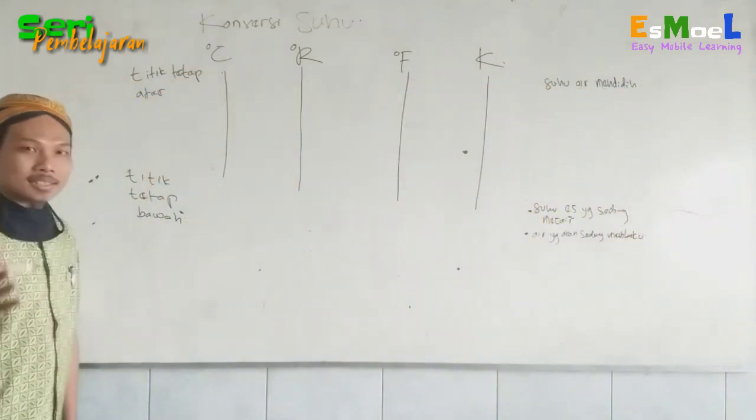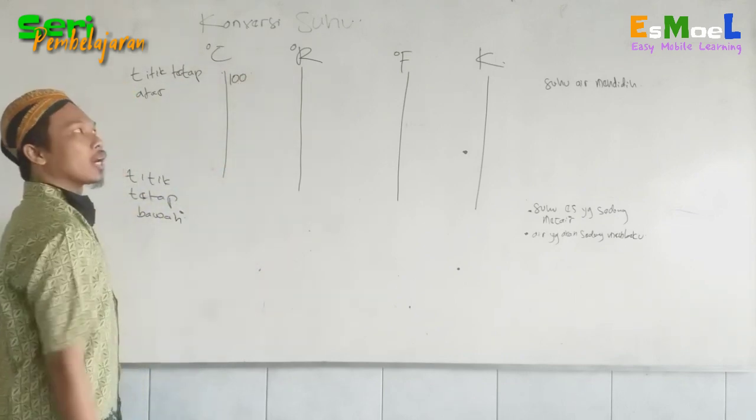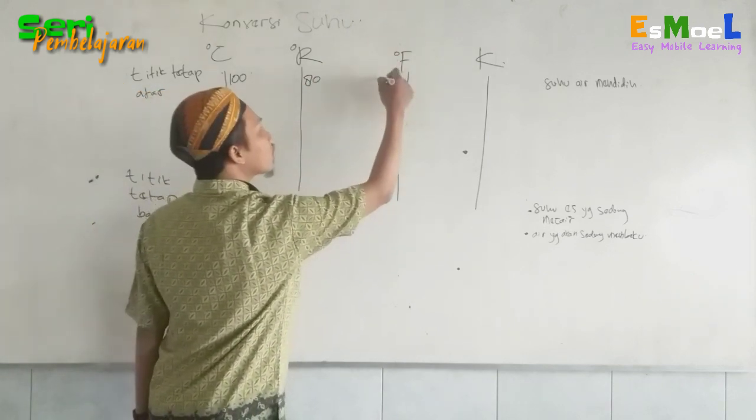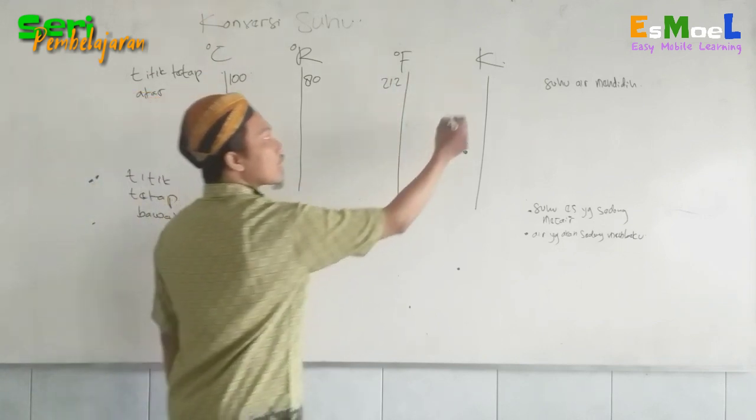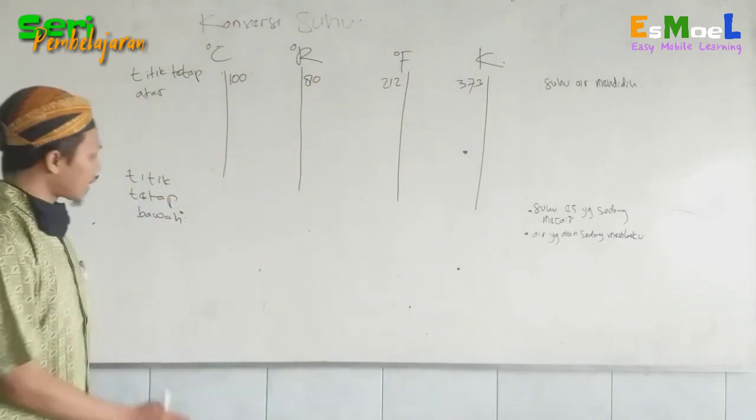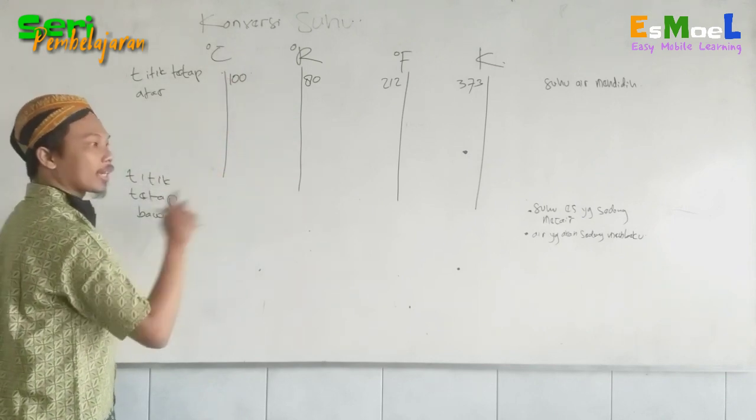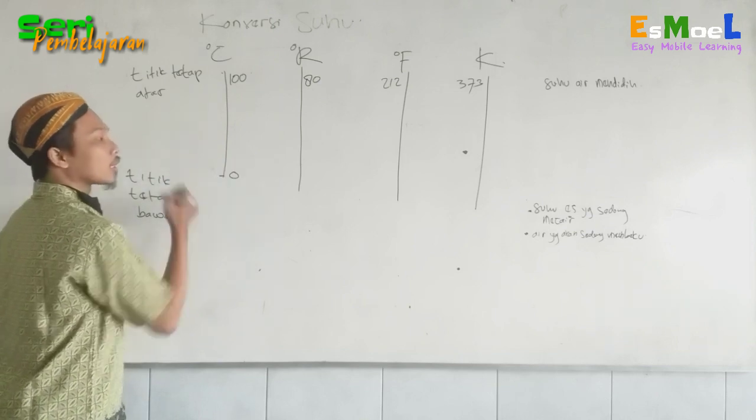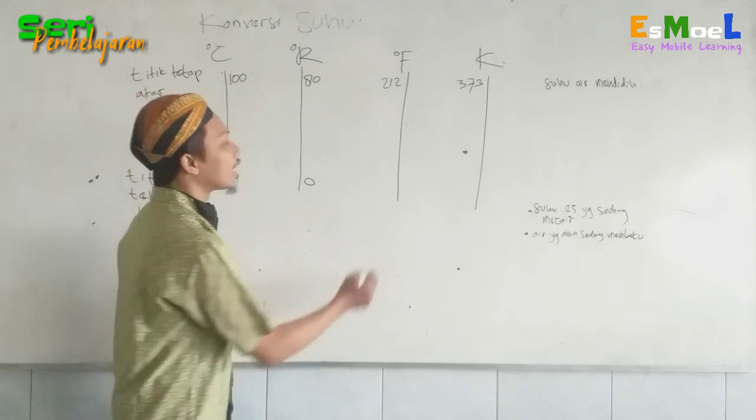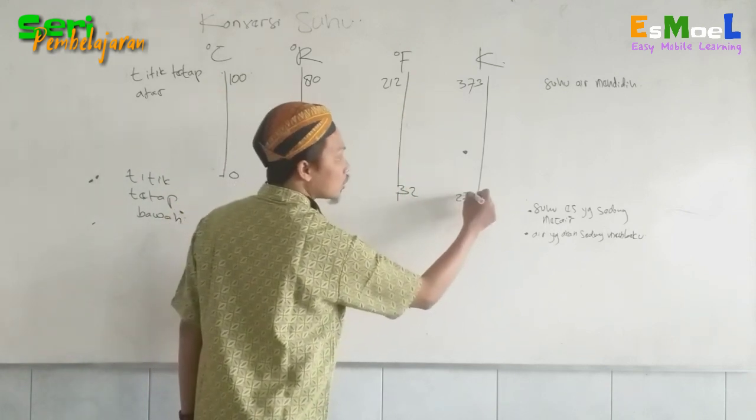Untuk Celsius, titik tetap atasnya air mendidih berapa? Yap, 100 derajat Celsius. Reamur 80, Fahrenheit 212, Kelvin 373. Lanjur titik tetap bawahnya. Kalau es yang sedang mencair atau air yang sedang membeku, itu 0 derajat. Masih sama, Reamur juga 0 derajat. Sedangkan di Fahrenheit, di sini 32. Sedangkan Kelvin ini 273.